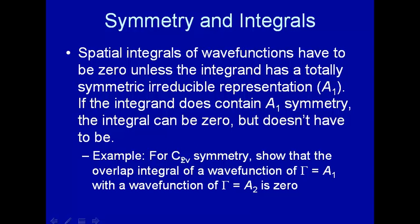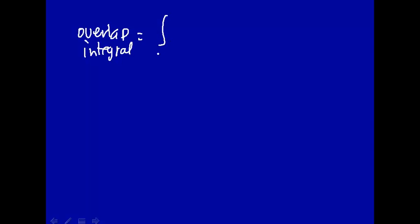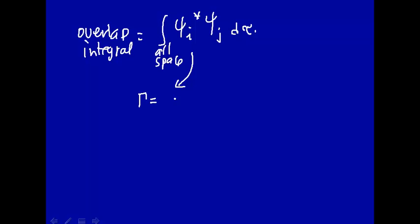Let's go ahead and do this. For C2v symmetry, suppose that we have a wave function with irreducible representation A1, and we multiply that with another wave function that has an irreducible representation of A2, and we want to show that the overlap integral is equal to zero. The overlap integral is the integral over all space of psi_i star times psi_j d-tau. Suppose psi_i has irreducible representation A1 and psi_j has irreducible representation A2.